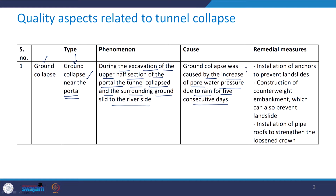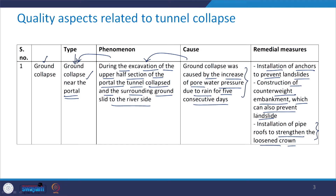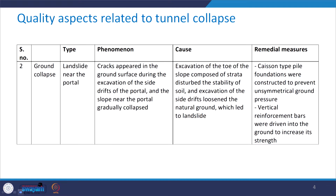In such a situation, the remedial measure adopted was the installation of anchors to prevent the landslides, then construction of counterweight embankments which can also prevent the landslides, and then installation of pipe roofs to strengthen the loosened crown.